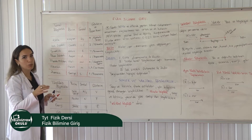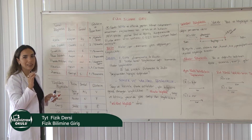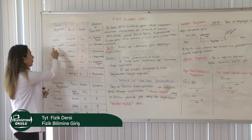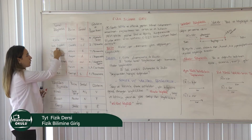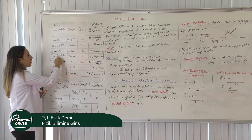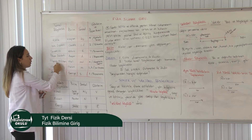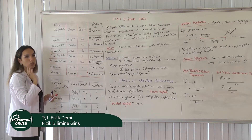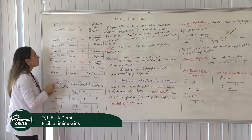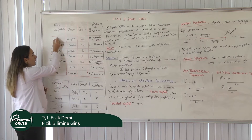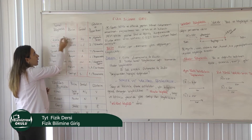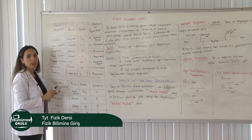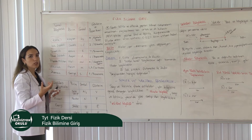Arkadaşlar, temel büyüklükler kısamızdı. Yani kütle, ışık şiddeti, sıcaklık, akım şiddeti, madde miktarı, uzunluk ve zaman olarak aklımıza kodladık. Şimdi kütlenin birimi denince ne geliyor aklımıza?